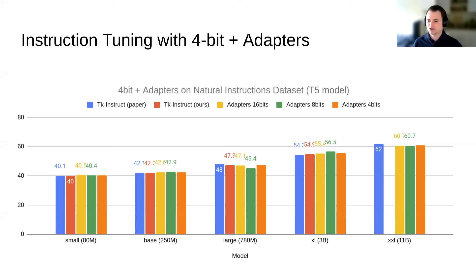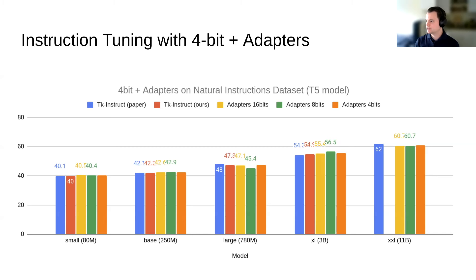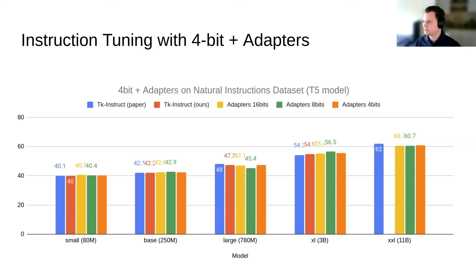Some early results: we fine-tune a T5 model on a Super-Natural Instructions dataset and replicate full fine-tuning performance. We also find that 16-bit base model plus adapters, 8-bit base model plus adapters, and 4-bit base model plus adapters all yield the same performance. This means quantization error can be rectified through fine-tuning, suggesting we can probably go more aggressively — even 3-bit — with this method, potentially opening up efficient models that run on mobile devices.